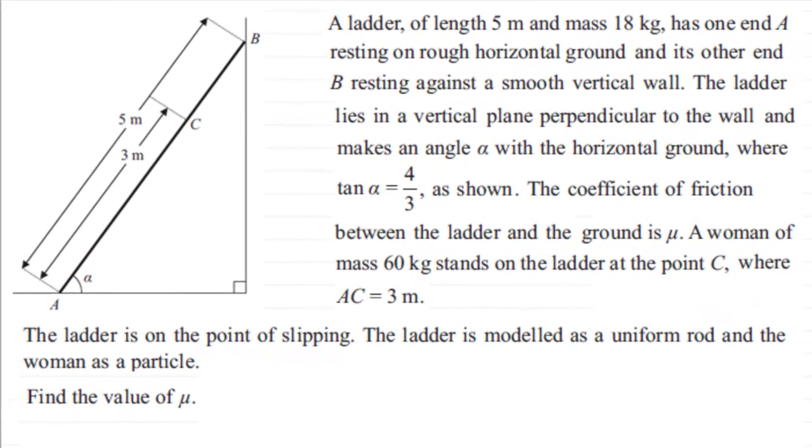Hi. Now in this example we've got a ladder of length 5 meters and mass 18 kilograms. There's one end A resting on a horizontal ground and this other end B lies on a smooth vertical wall. And the ladder lies in a vertical plane perpendicular to the wall and makes an angle alpha with the horizontal ground where we're told that tan alpha equals 4 thirds.